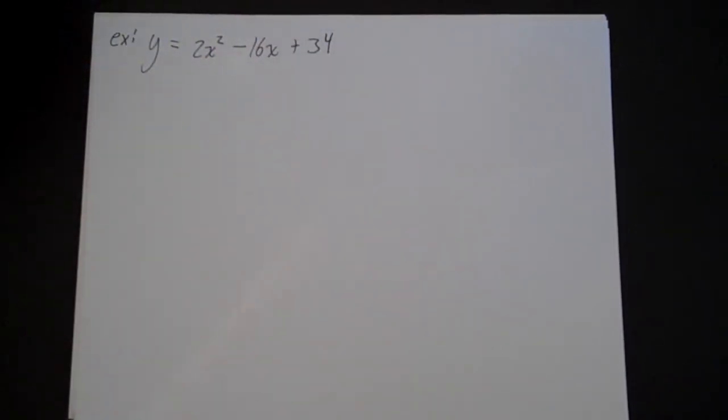So let's look at a similar problem. Let's look at a similar problem, just another example. Let's look at y equals 2x squared minus 16x plus 34. Let's rewrite this in HK form, also called vertex form.